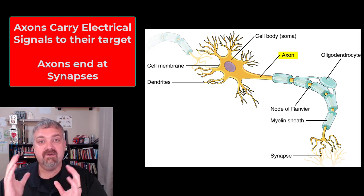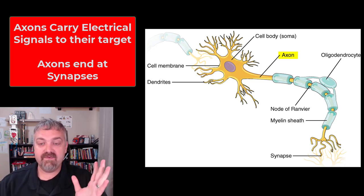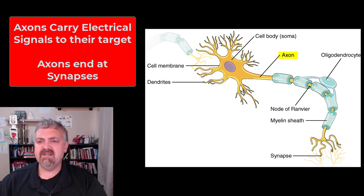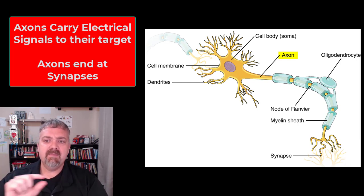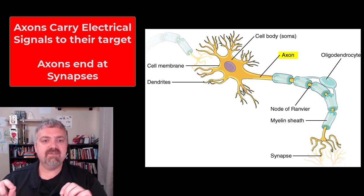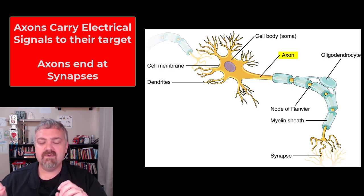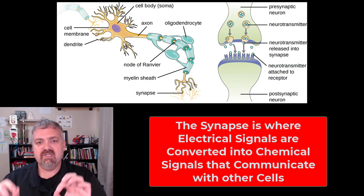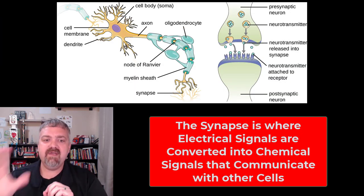An axon is going to be what carries the electrical signal from this neuron's cell body to wherever its target is. So if a neuron decides to act, whatever its function is, it's going to fire a signal down this axon. We'll cover the oligodendrocytes and myelin later. At the end of that axon, you see how it branches off — those single axon branches are called collaterals. And then at the tail end, you have what are called teledendria as they branch even more.